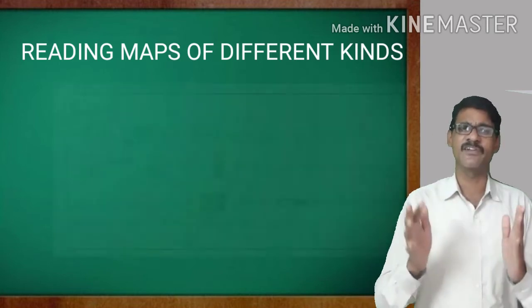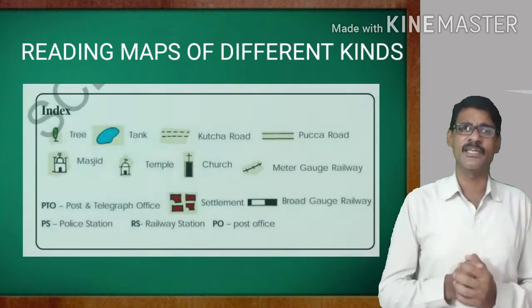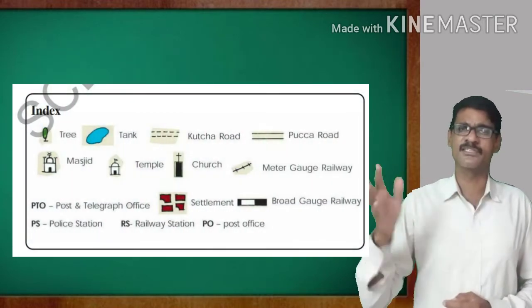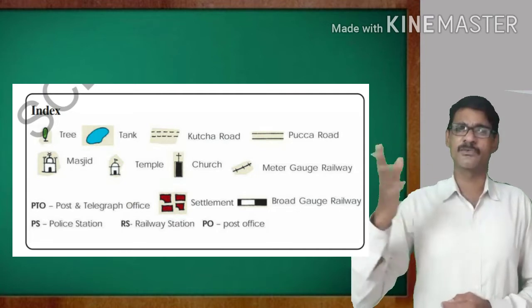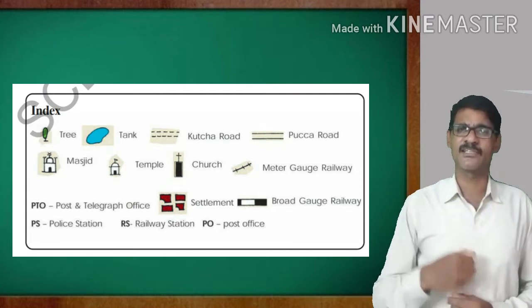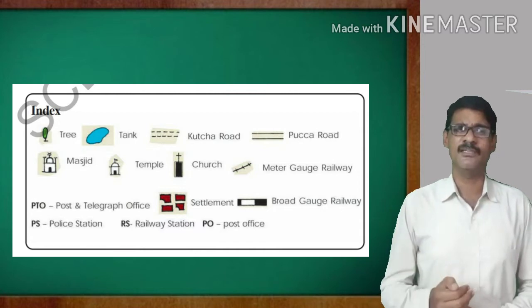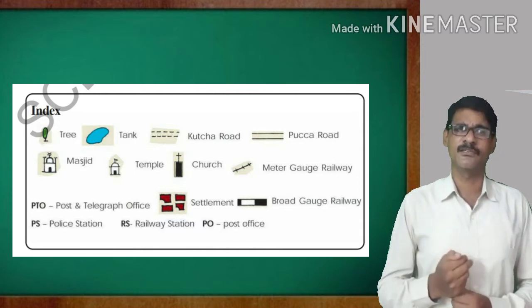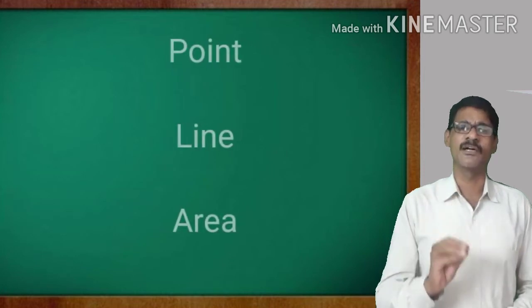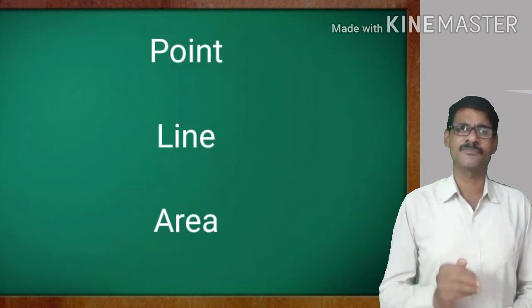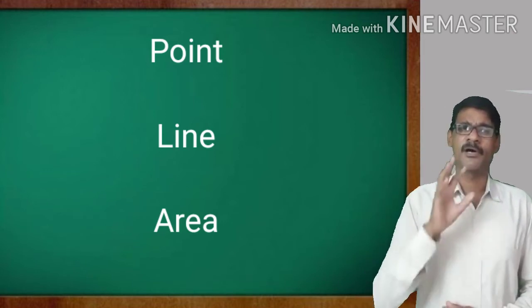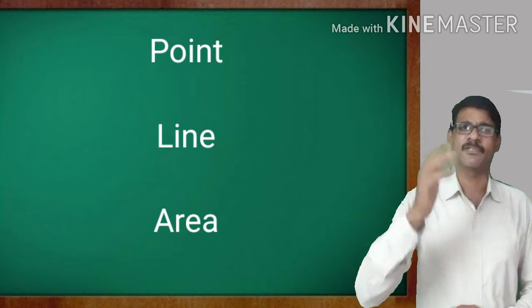Already we have learned the different types of symbols used in our maps for the settlements, for the trees, for the forest, for the post office, for the schools, and for the railway track, for the Kaccha road, Pakka road. Today we are going to learn about the point, line, and area symbols.